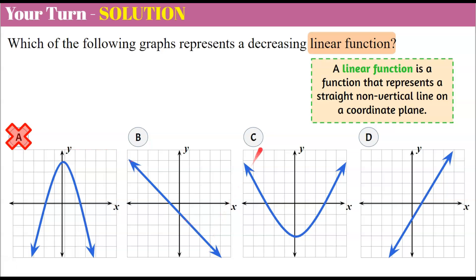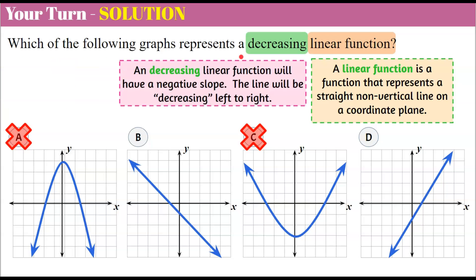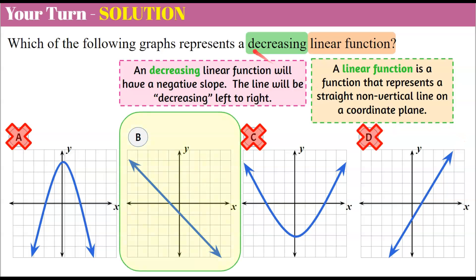B is a line — it's linear. And D is a linear function; it would pass the vertical line test. So we know it's either B or D. Now we look at our second defining word: decreasing. A decreasing linear function will have a negative slope — the line will be decreasing left to right, sloping down. Looking at B, as I read the graph, I'm going downward on the line. Looking at D, as I read left to right, I'm going up — it's increasing. So D is an increasing linear function, but we're asked for a decreasing linear function, which is graph B.